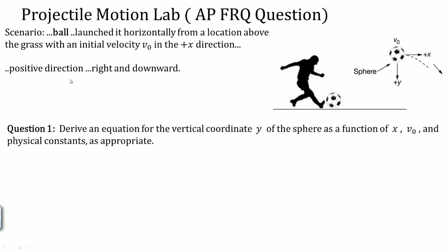Notice that information from the scenario can be ignored. These are the only important parts: ball launched horizontally from a location above the grass with initial velocity v₀ in the x direction. Your positive direction is to the right and downward. You can see the picture labeled with the direction.